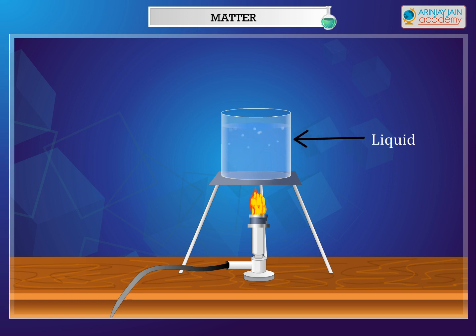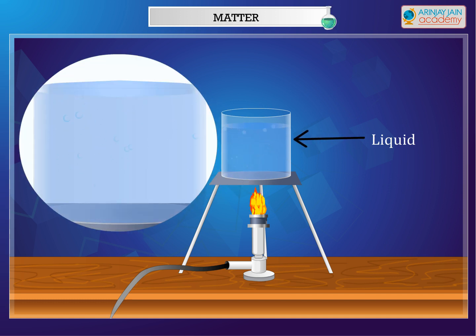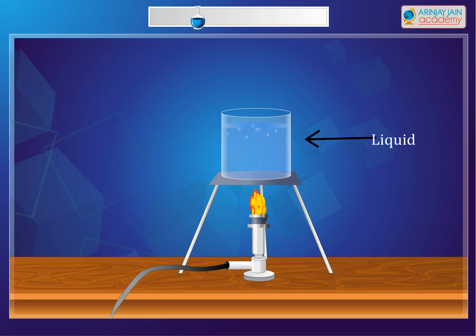If we further heat the liquid, we will see bubbles rising to the surface of the liquid. This is called boiling. Soon the liquid will change into vapour. The change of a liquid to vapour on heating is called evaporation.